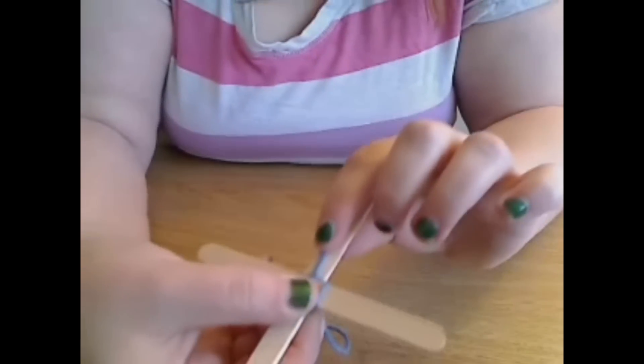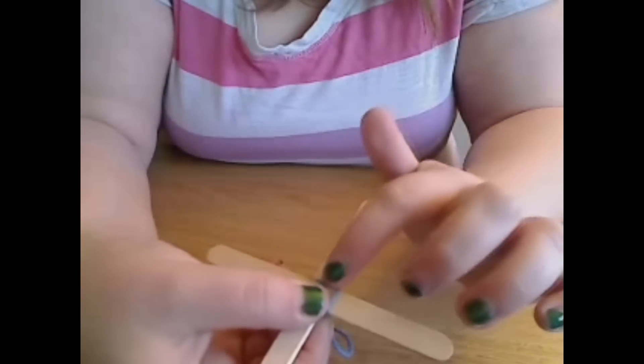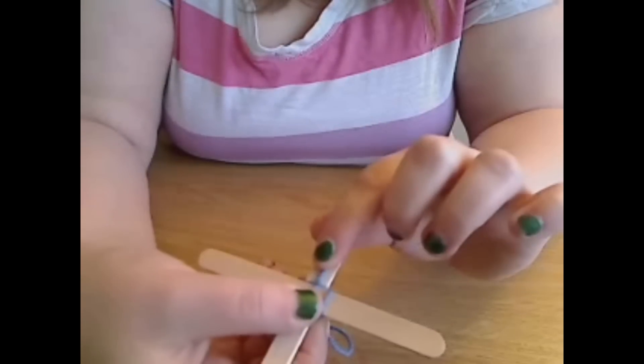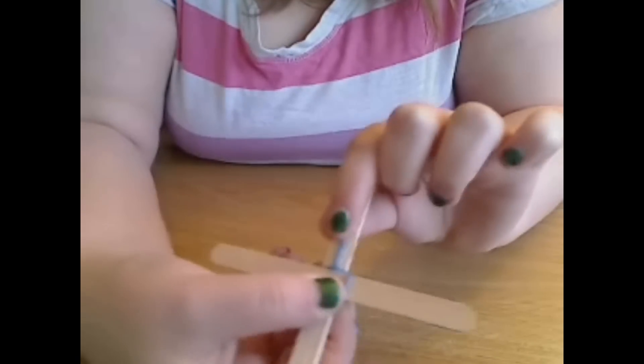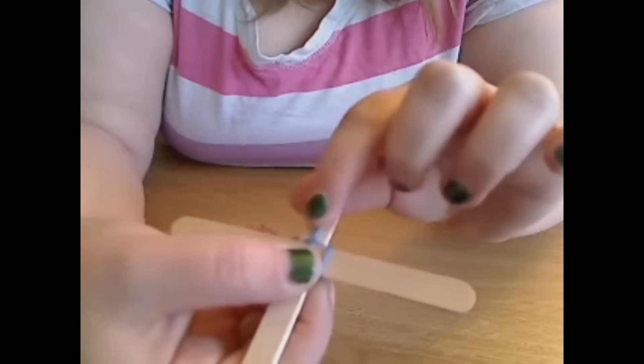When you get to the one that has the string down over it to hold the end of the string down, take your yarn and loop it over the end of the yarn so it holds it down.